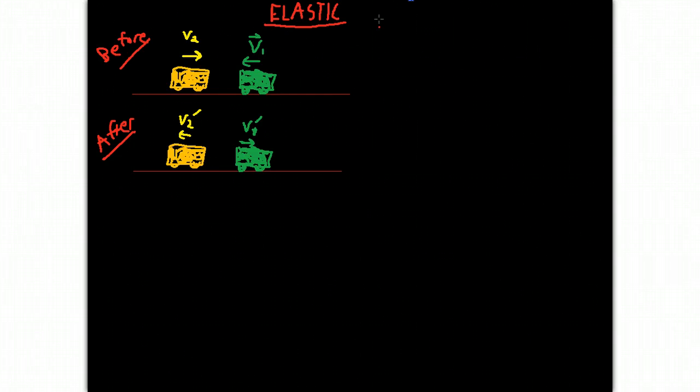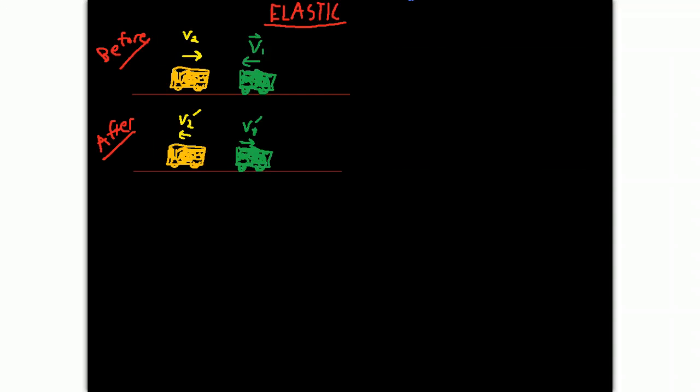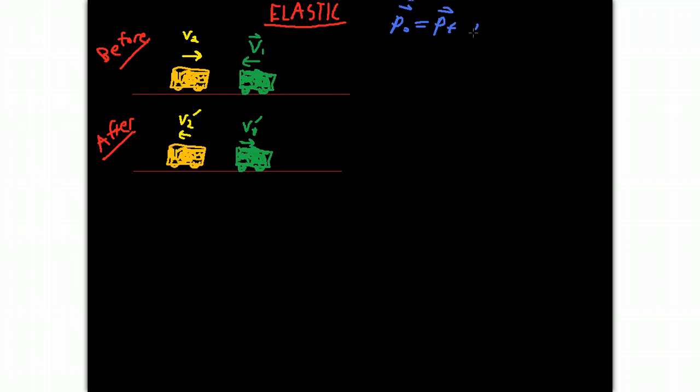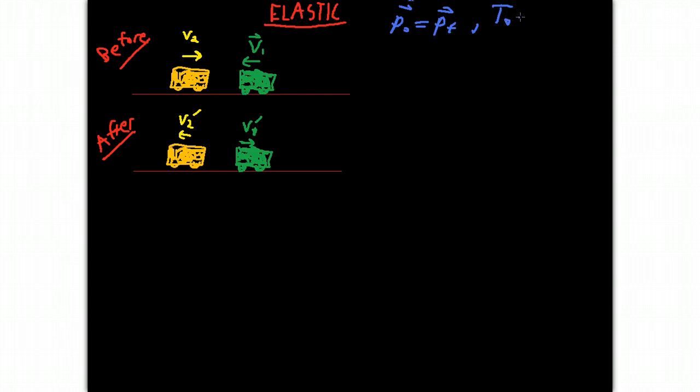The first thing is that if we look at an elastic collision, we're of course dealing with momentum being conserved, and this is true for any collision type. But the defining characteristic of the elastic collision is that in addition to that, the kinetic energy, the linear or translational kinetic energy of the system is also conserved.